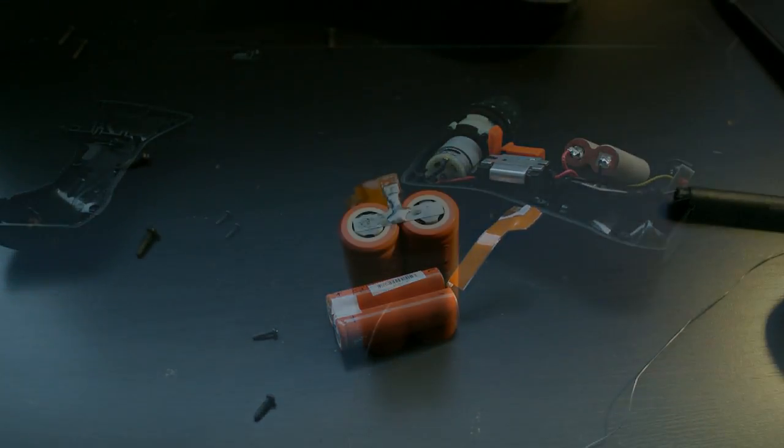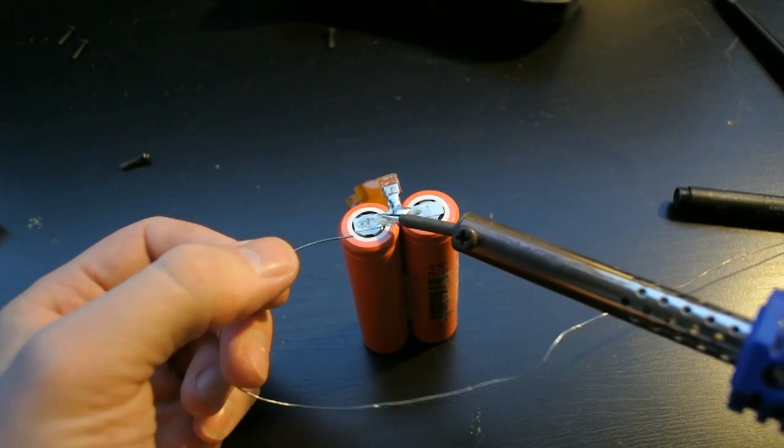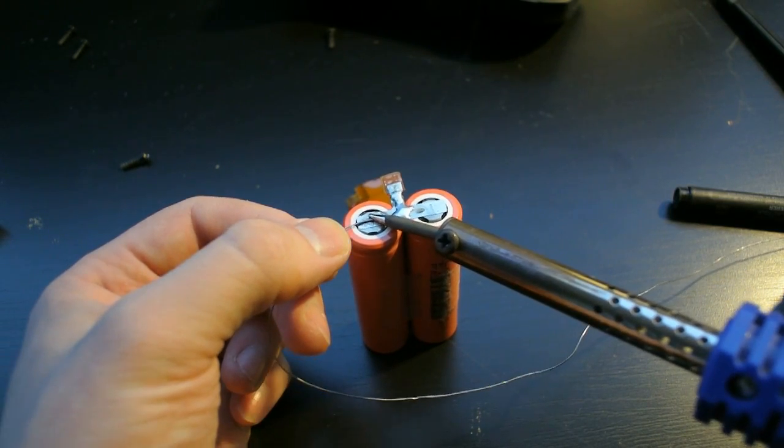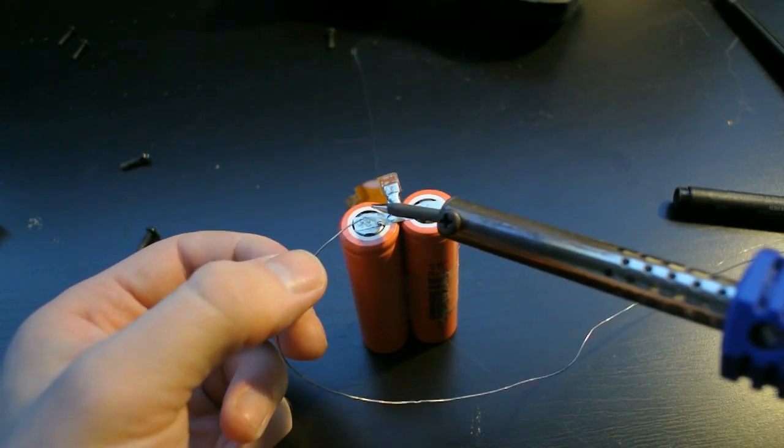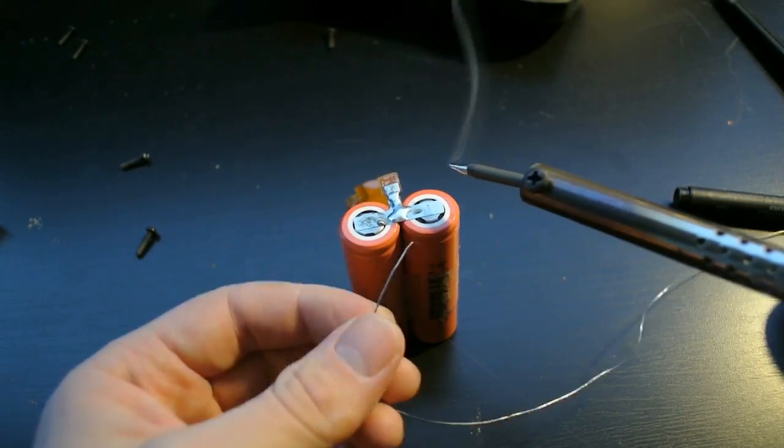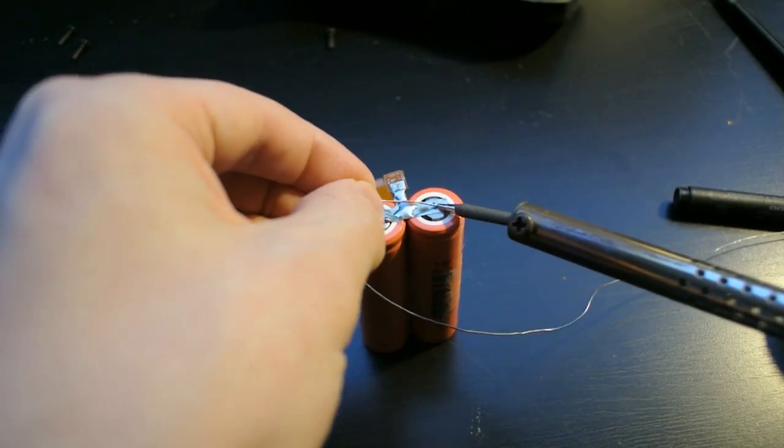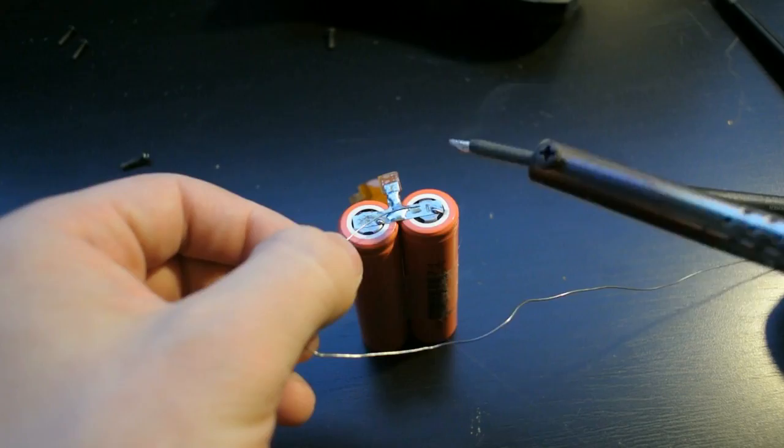I'm going to be adding some solder to the original tabs in the cells so that the soldering in the drill will be easier later on. You'll want to make sure that you use the minimum amount possible when soldering directly onto the cells so that they don't warm up. These cells do not like warming up.